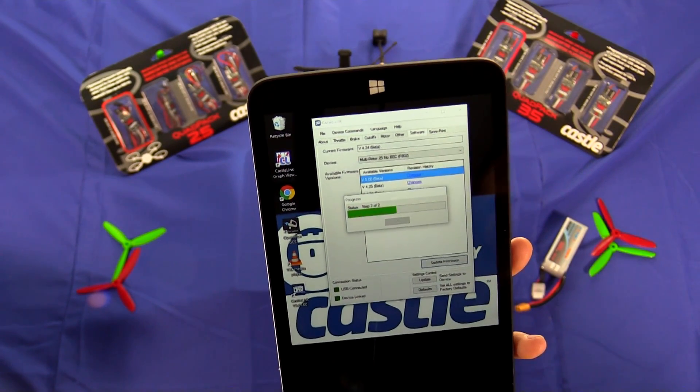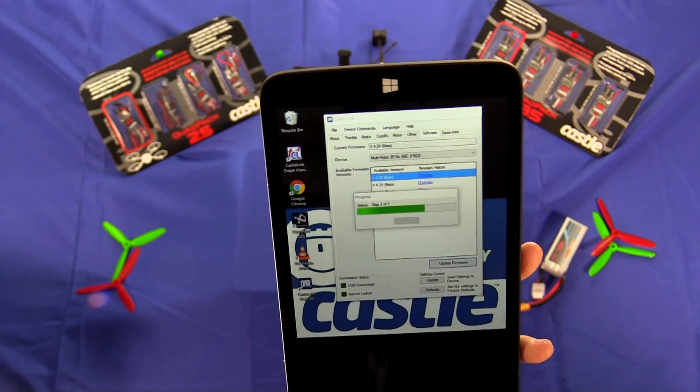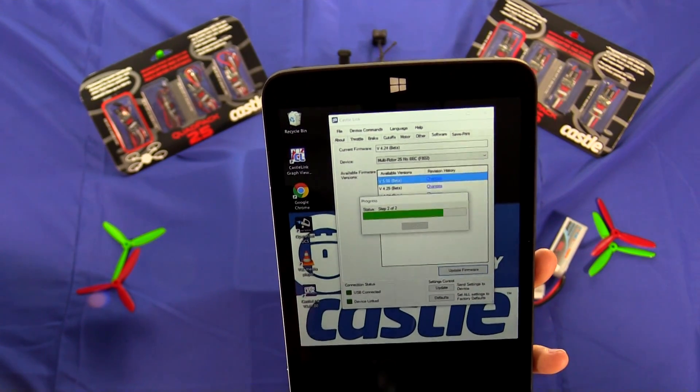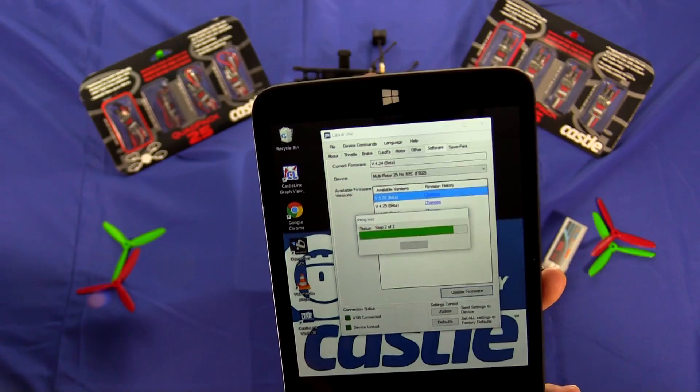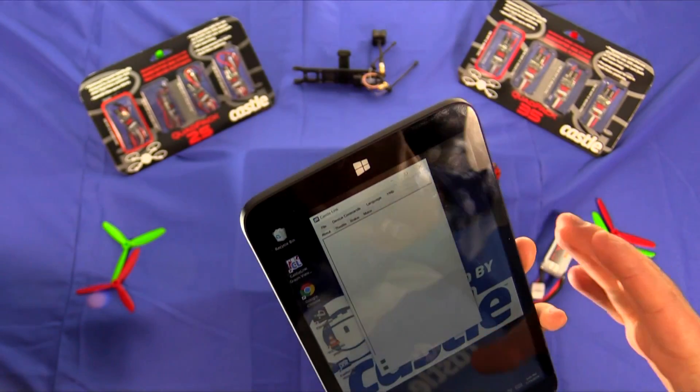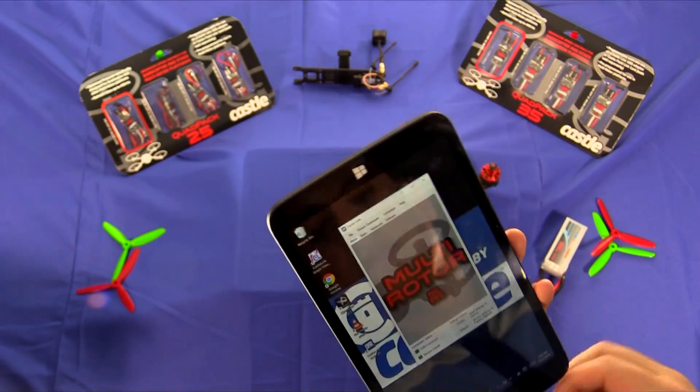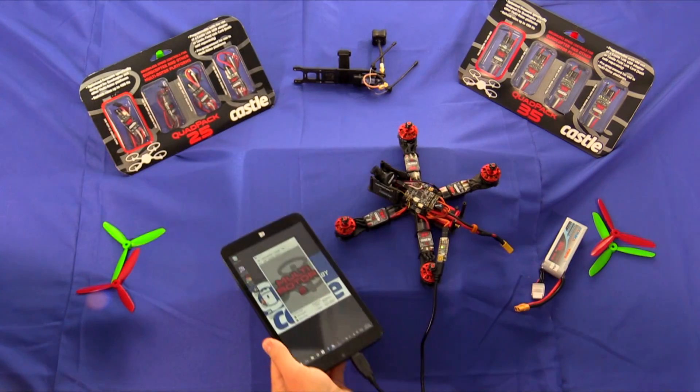So once the update is complete I'm going to take you through the calibration process for the ESC. We've added a very easy calibration process that lets you set the endpoints as well as the motor rotation. Some other features is we have one shot 125. We've added an adaptive timing system that gives you more efficiency during the flight.